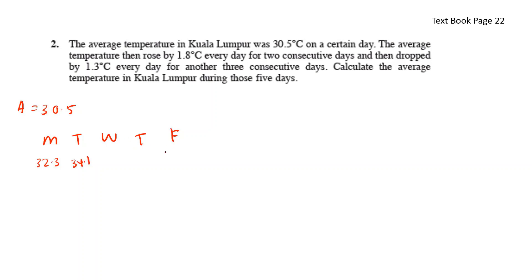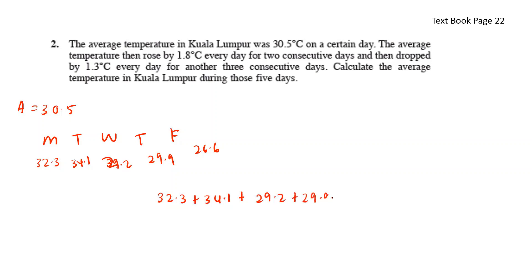Then the temperature dropped by 1.3°C for the next three days: Thursday is 34.1 minus 1.3 equals 32.8... wait — starting from the average: Wednesday 34.1, Thursday 32.8, Friday 31.5. To calculate the average temperature over the five days, add all values and divide by 5, giving 30.02°C.